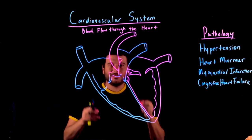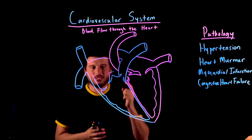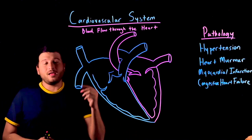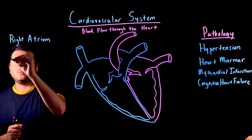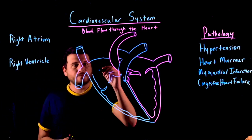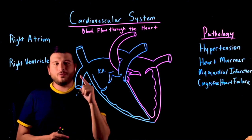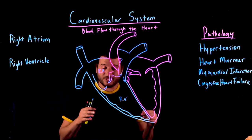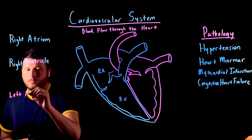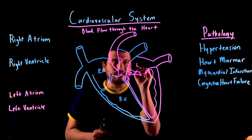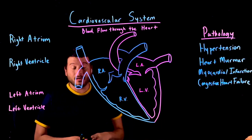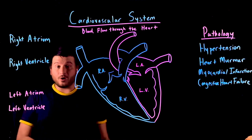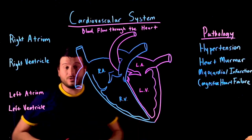All right. So here we have a great drawing of the heart. Let's start with the four chambers of the heart. We're going to start with the right atrium and the right ventricle. The right atrium is right here, and the right ventricle is right here. Now let's do the left atrium and the left ventricle. The left ventricle is right there. So we have the four chambers of the heart, which are the two atria on top and the two ventricles below.